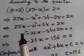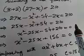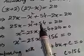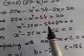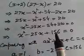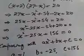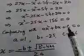Now, bringing 210 to the left side: minus x squared plus 25x plus 54 minus 210 equals 0. Rearranging, minus x squared becomes plus x squared, 25x becomes minus 25x, giving us x squared minus 25x plus 156 equals 0. Comparing with the general quadratic equation ax squared plus bx plus c equals zero.